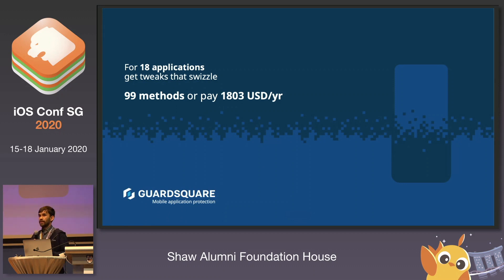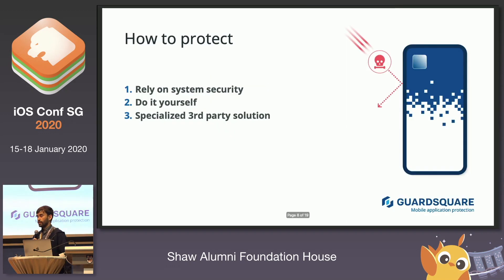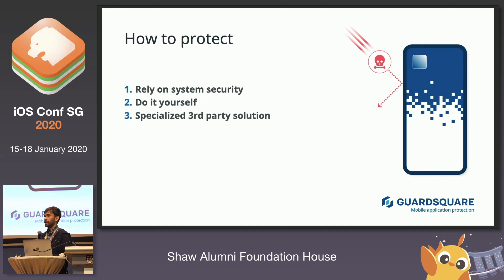So what can you as a developer do to make sure your users don't have this choice? There are a few options. You can choose to rely on system security, you can try to do it yourself, or you can reach for a specialized third-party solution.